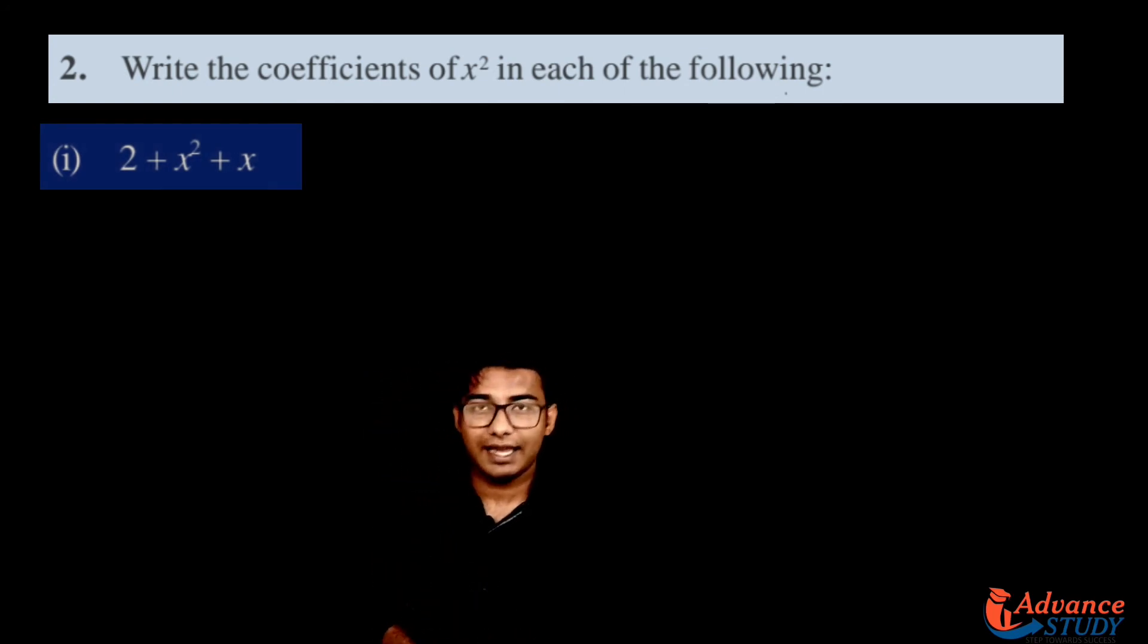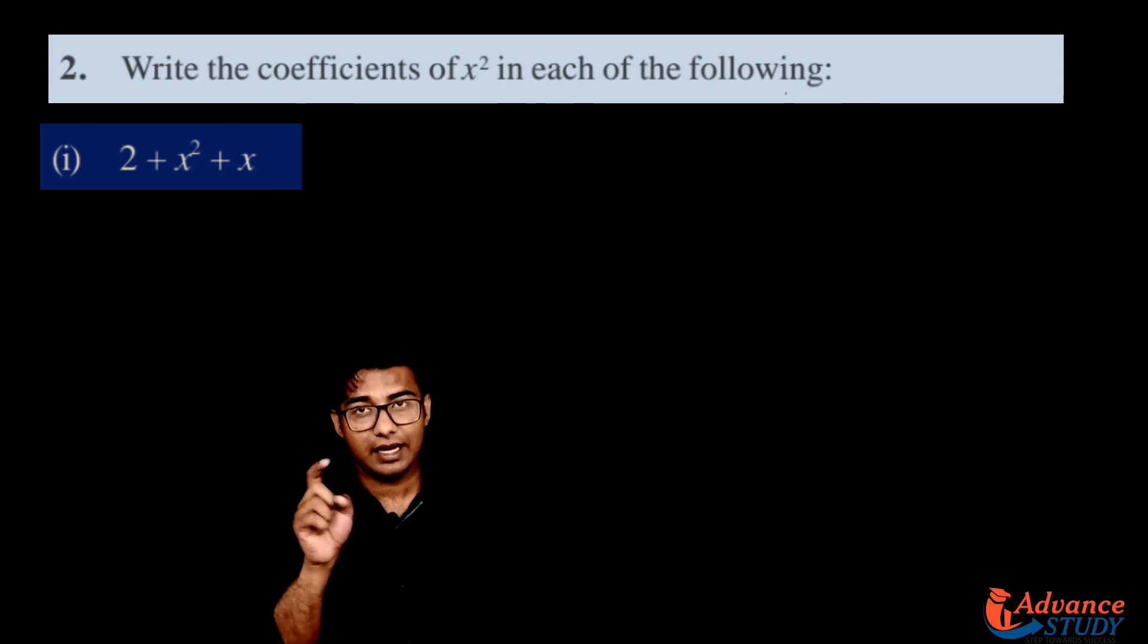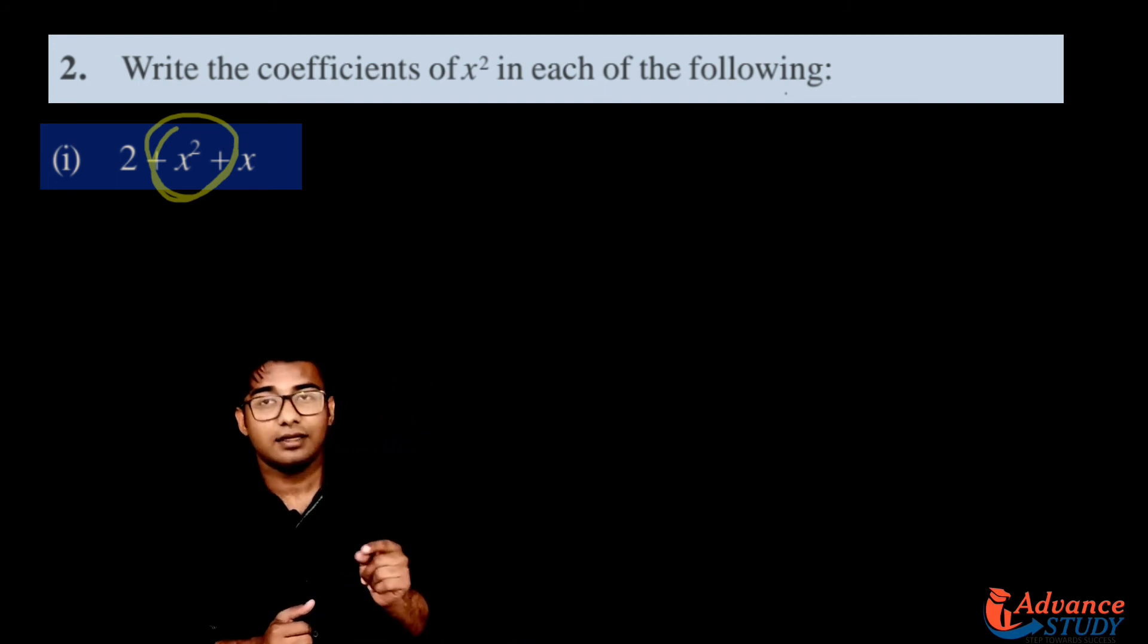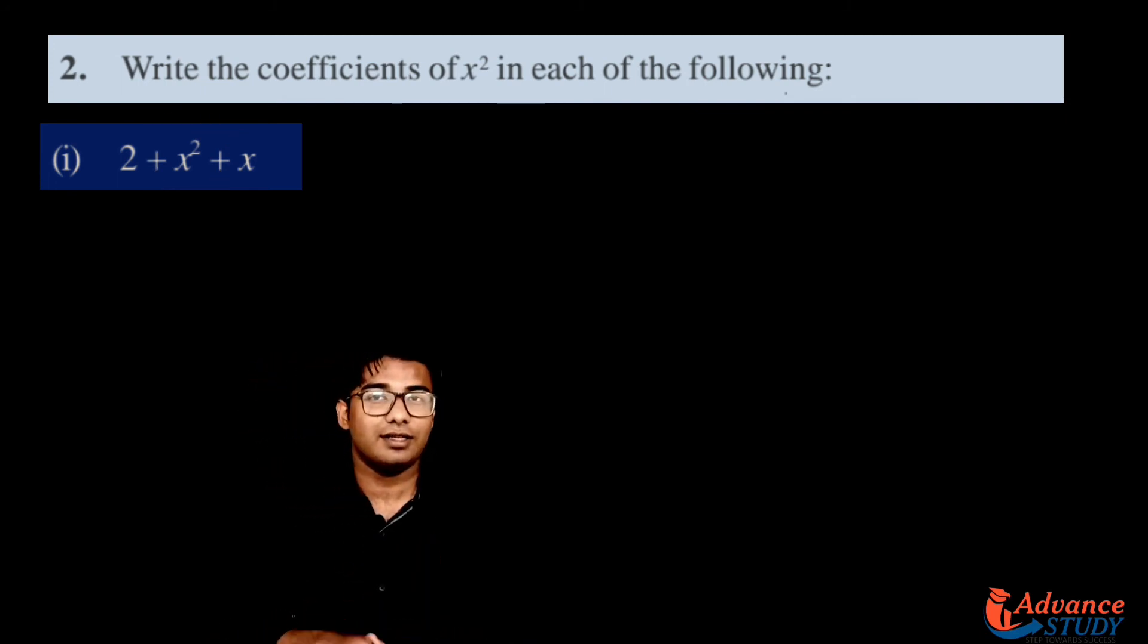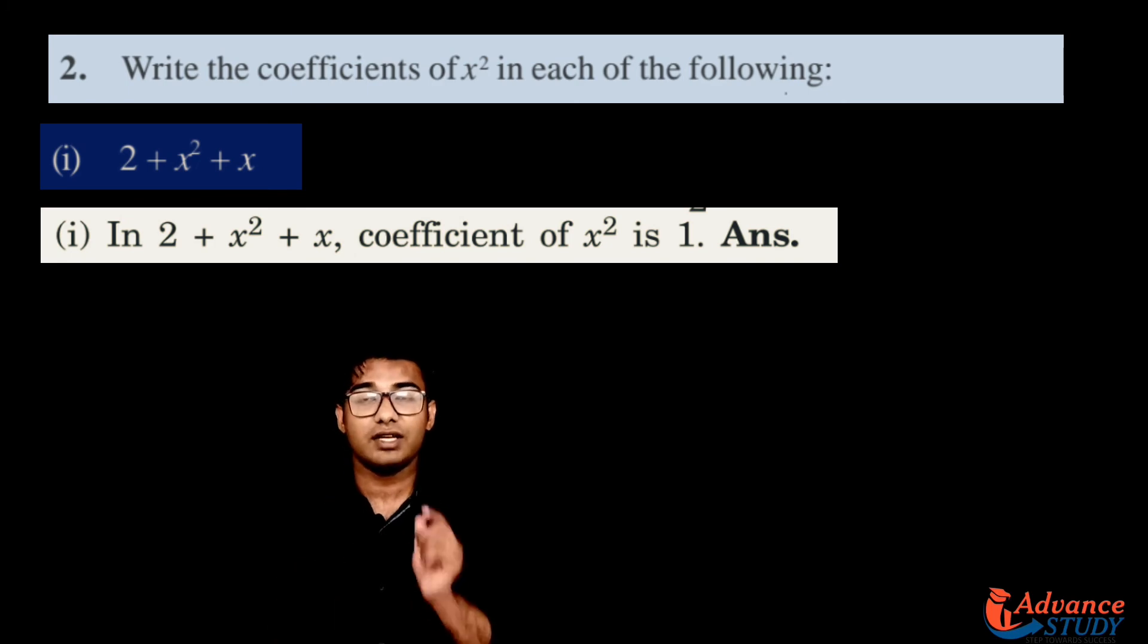The first question is 2 plus x² plus x. Who is the neighbor of x²? Many students think that 2 is the neighbor, but that's not correct. The neighbor of x² is 1. If there is no number, then there is a 1.